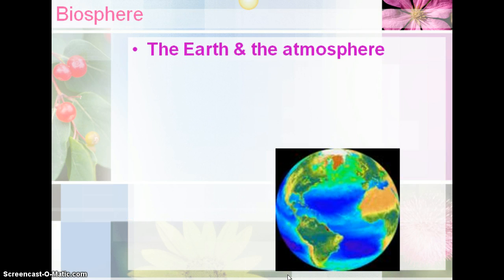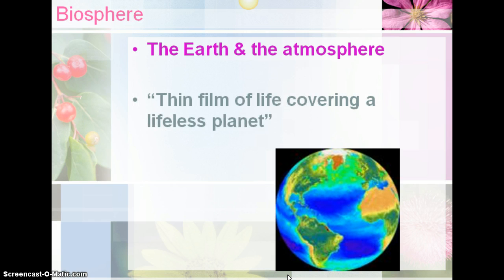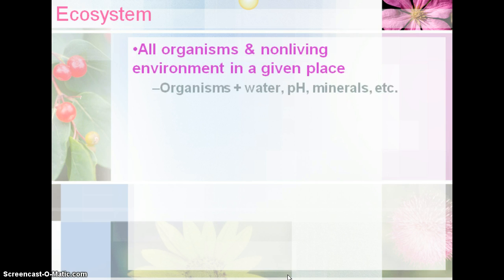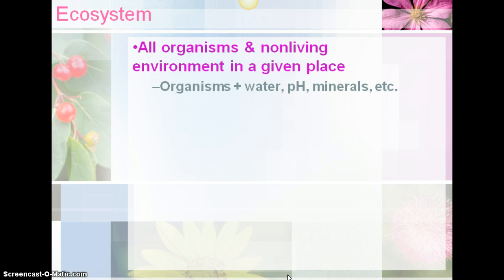Some definitions of those levels: The biosphere is the earth and the atmosphere — quoted here as 'a thin film of life covering a lifeless planet.' The ecosystem is a little more narrow: all organisms and the non-living environment in a given place. So we're looking at the organisms, the living things, but also the abiotic things — the water, the pH, the minerals, the soil, the rocks, and even the decomposing things on the forest floor.